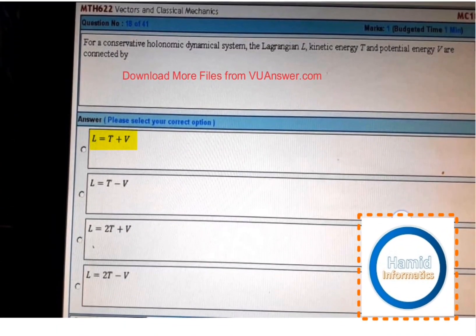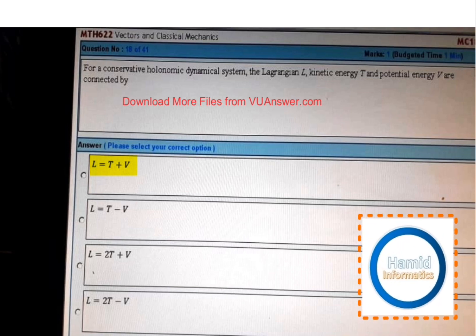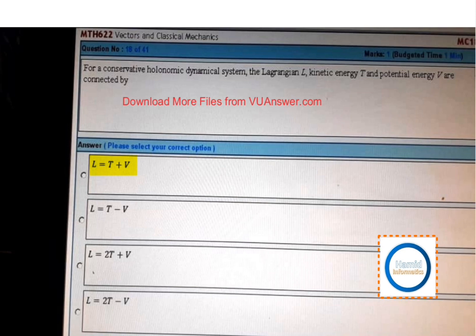Next, for a conservative harmonic dynamical system, the Lagrangian L, kinetic energy T, and potential energy V are connected by L equal to T plus V.